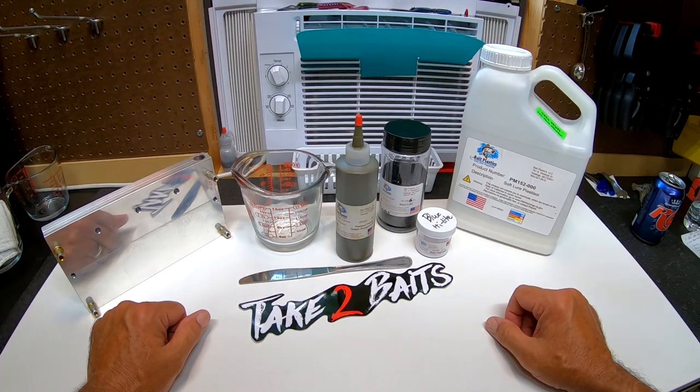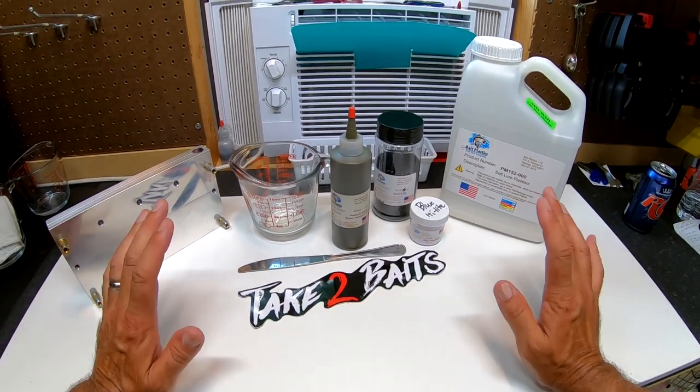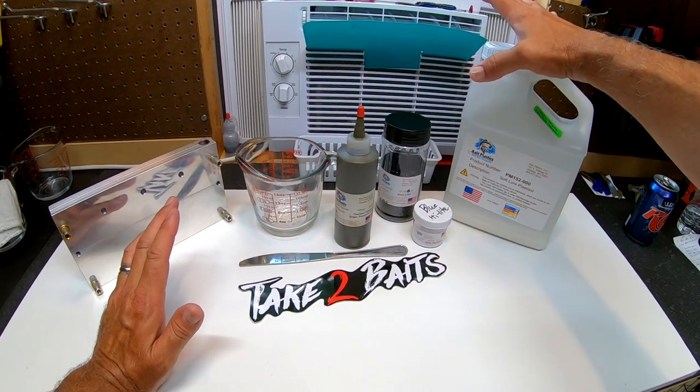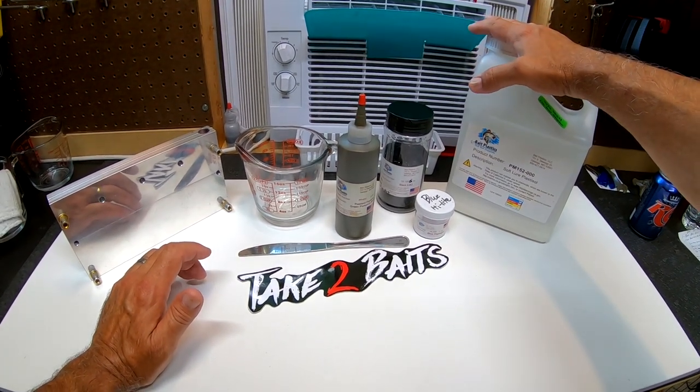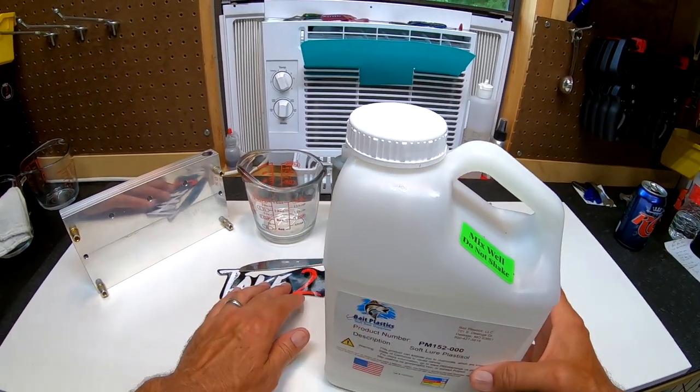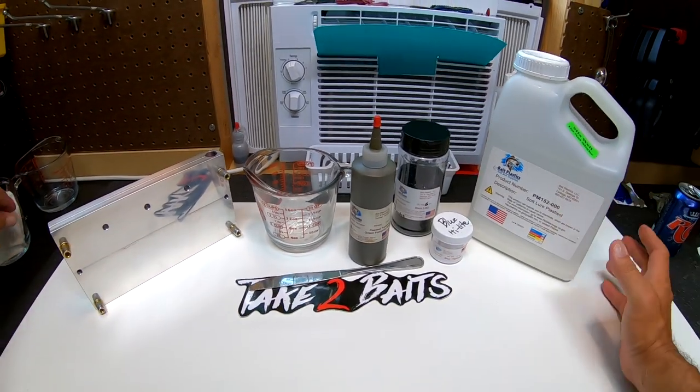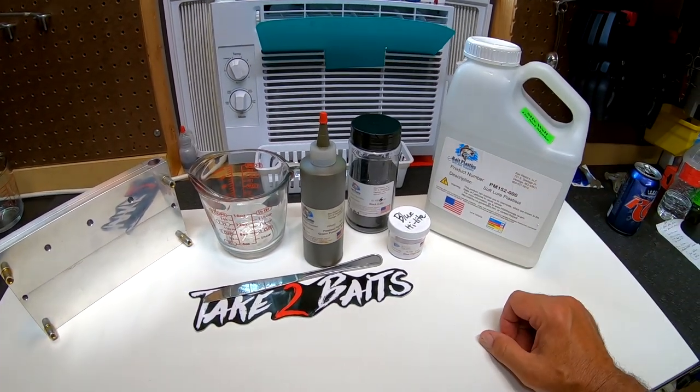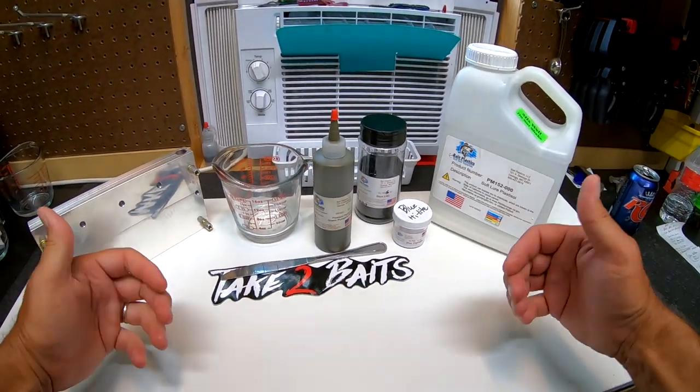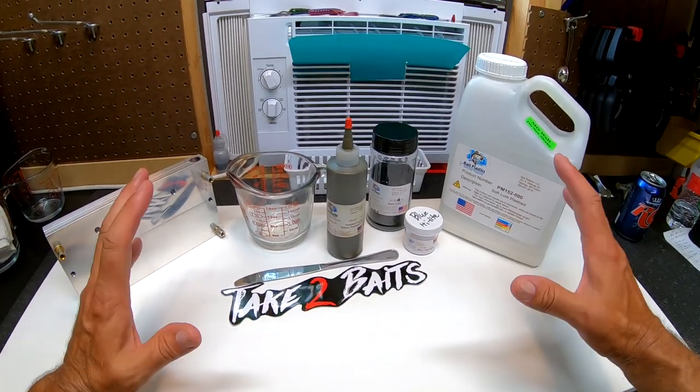The reason why I say it's okay to shake is simply because I have a degassing chamber. If you do not have a degassing chamber, you will run into some problems. But, I want to let everybody know, Bait Plastics degasses from the factory and places it in a box and ships it to you. UPS, FedEx, or whoever delivers it is going to kick it, drop it, throw it, or whatever. So there's going to be bubbles in it already. I am a firm believer in degassing my products simply to remove bubbles from the finished product.